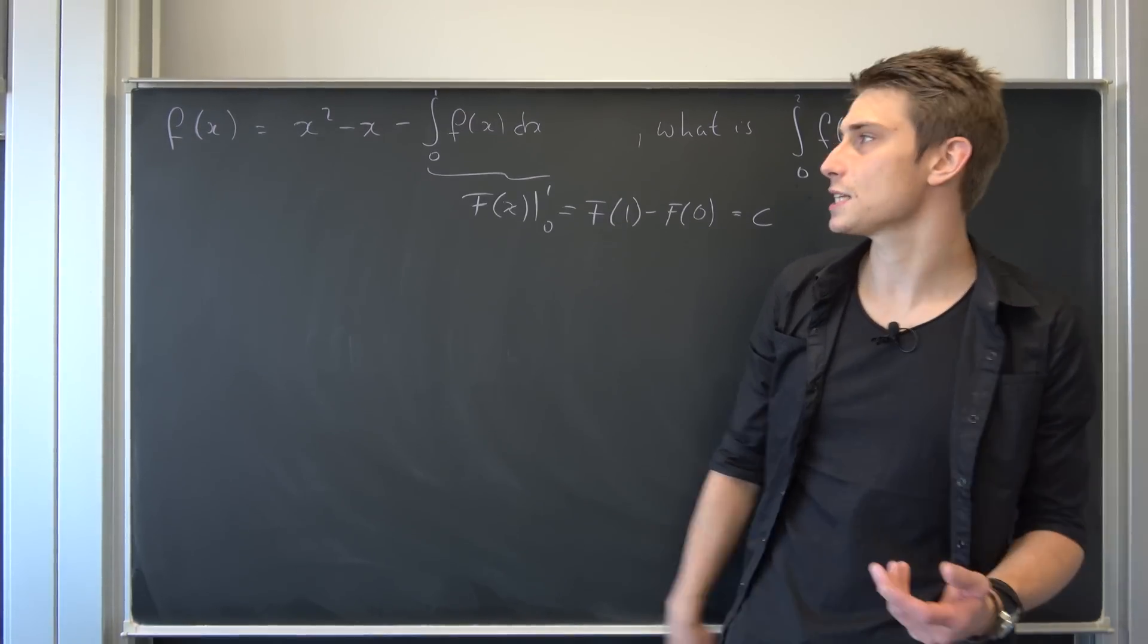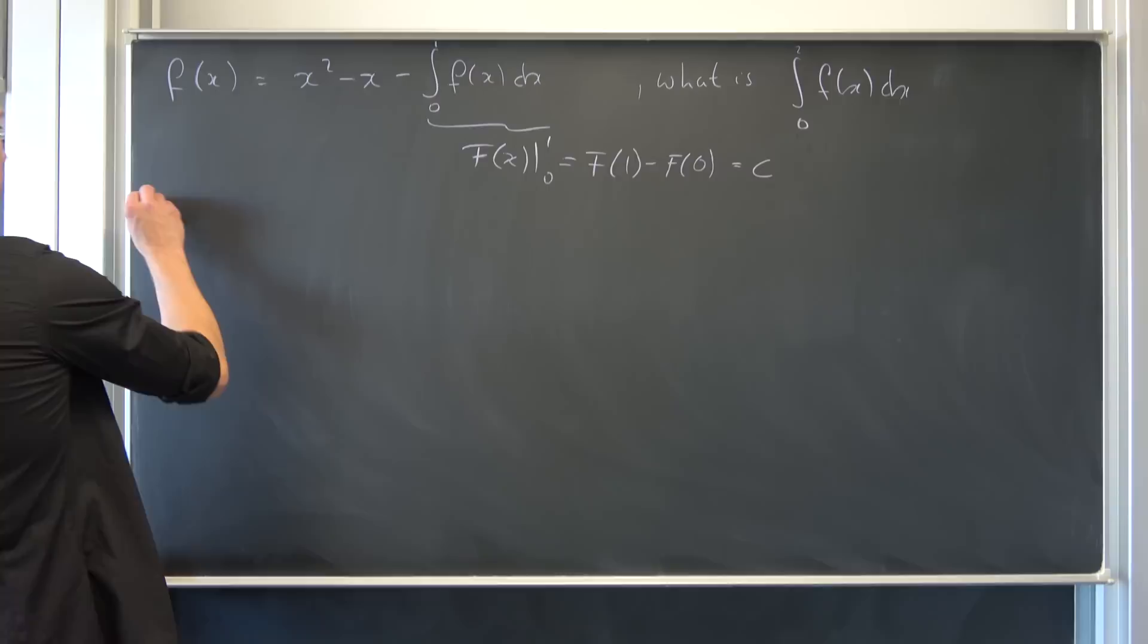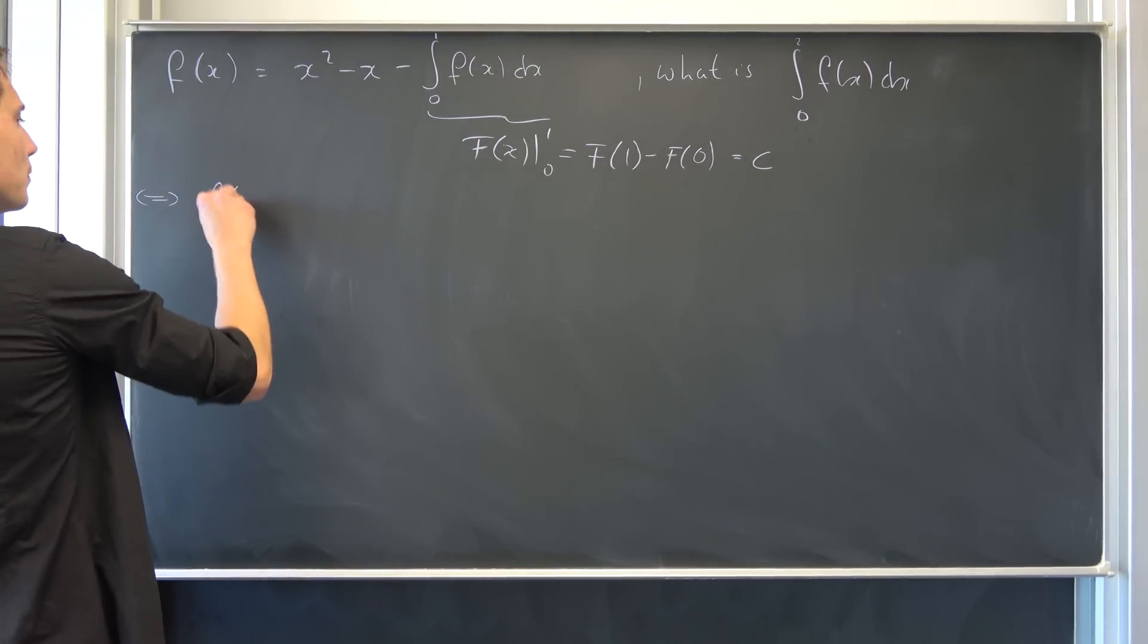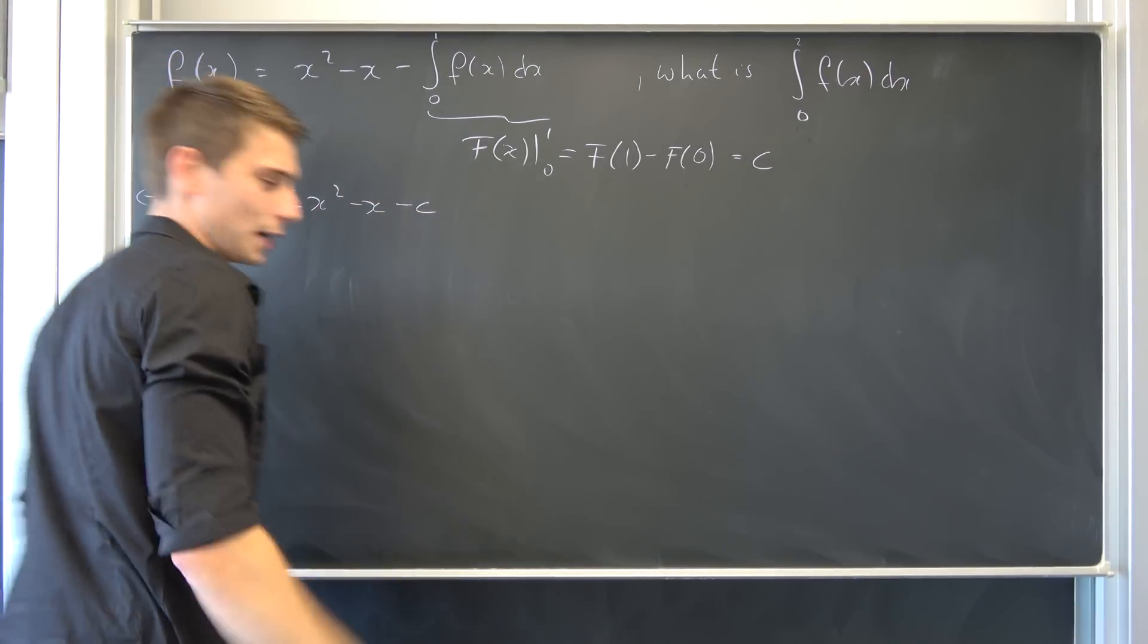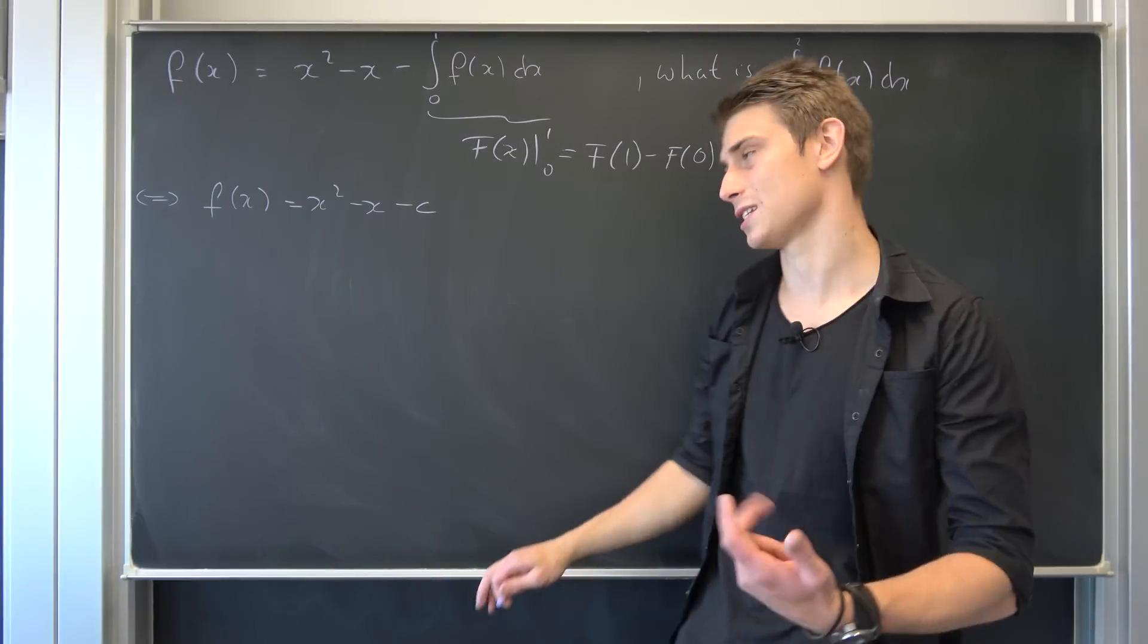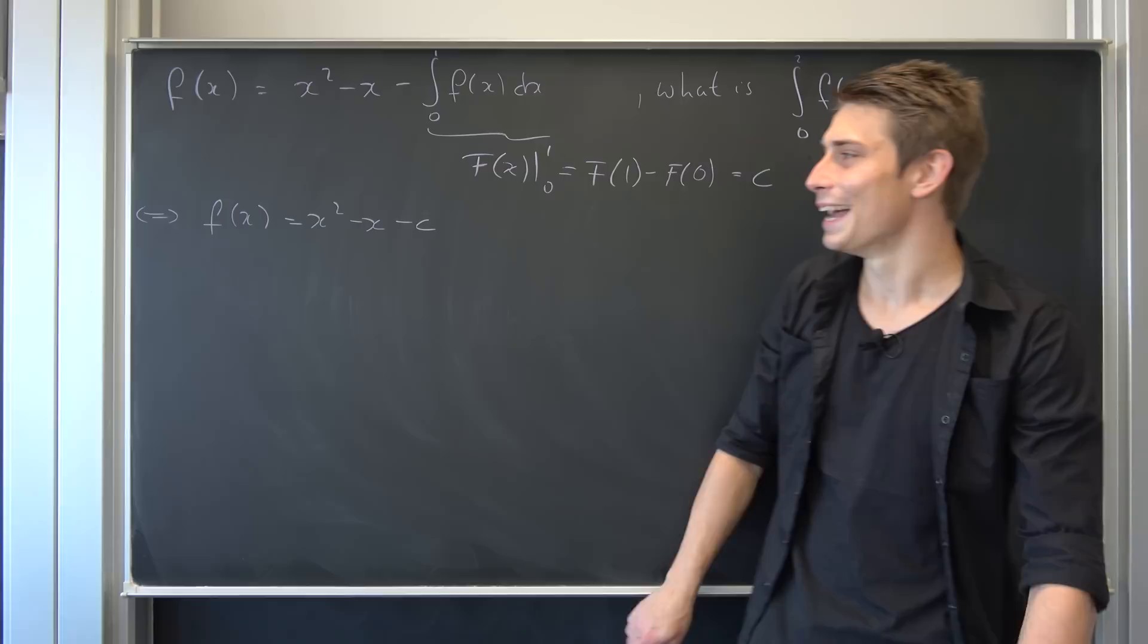So this is making things easier. We can actually plug this in right now. We really don't care what c is at the moment. That also means that we have some f(x) equals x squared minus x minus some arbitrary constant c at the moment. No, it's not really arbitrary, it's just a constant right now.